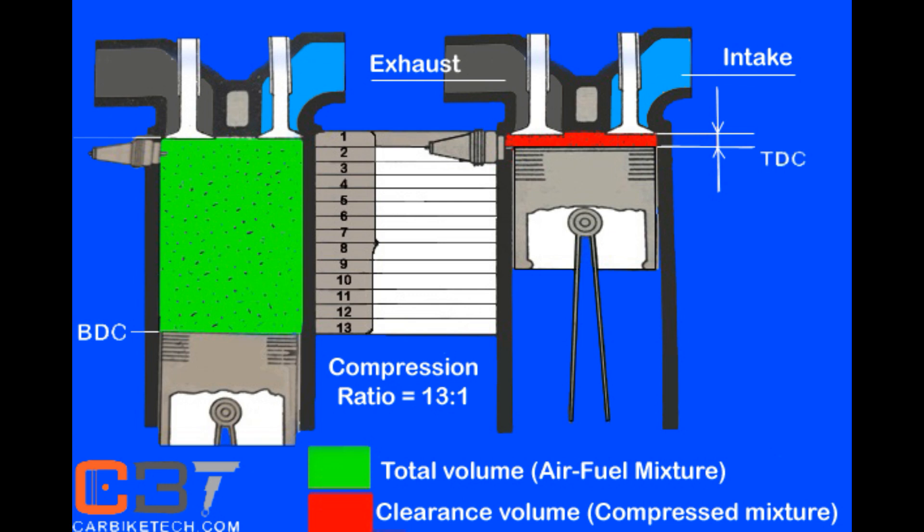It is found that the greater the compression ratio, the more will be the power output of the engine. The compression ratio of a diesel engine is much higher than that of a petrol engine. For petrol engines the CR varies from 10:1 to 14:1, and for diesel engines the CR varies from 18:1 to 23:1.